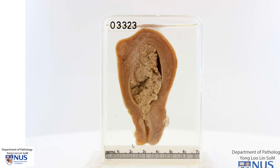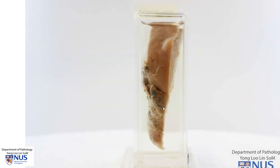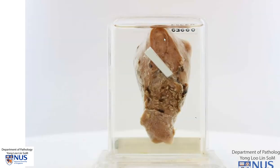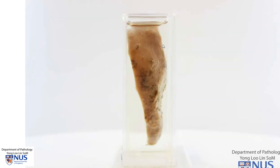Just to orientate you, this is the anterior surface and this is the posterior surface of the uterine serosa. Looking at the anterior surface, the uterine serosa reflects anteriorly off the bladder, so here is the part where you no longer see the serosa because it reflects off the bladder. This is the right lateral surface of the uterus and the adnexa have been dissected away. Here is the posterior uterine serosa surface where you can see the peritoneal covering actually extends a little bit lower down and then reflects off the rectum.